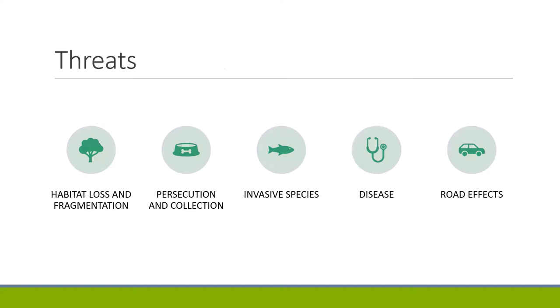There are several threats to Ontario snakes, including habitat loss and fragmentation — the one threat that all species at risk snake species have in common. Transforming the natural environment to human land uses has negatively affected snake populations, and constant development pressure will only continue to limit ranges of species at risk snakes. Other threats include the pet trade, people killing snakes out of fear, invasive Phragmites eliminating shallow water habitat, snake fungal disease, and road mortality — snakes travel two to three kilometers between habitats and must cross many roads to survive.